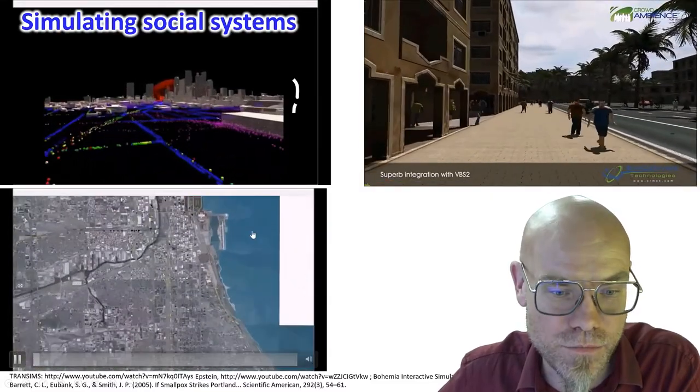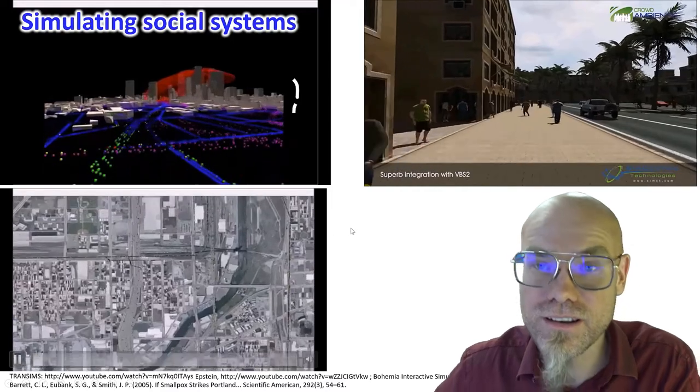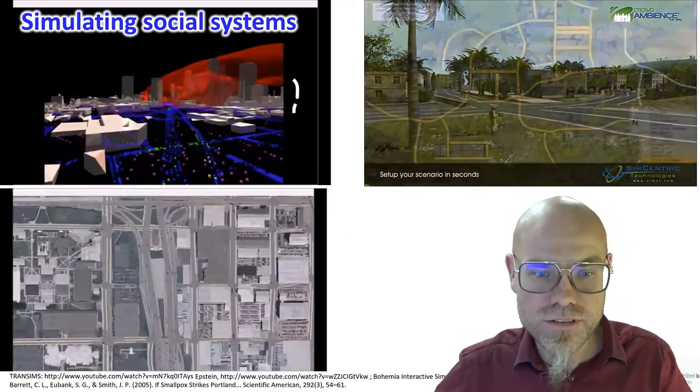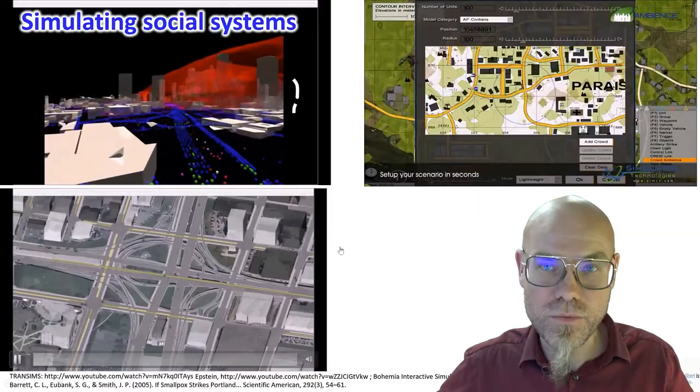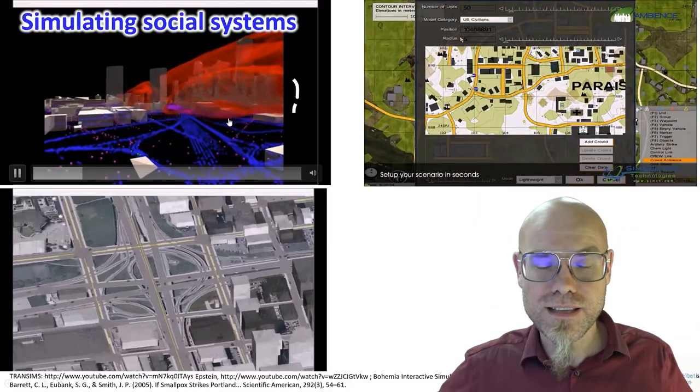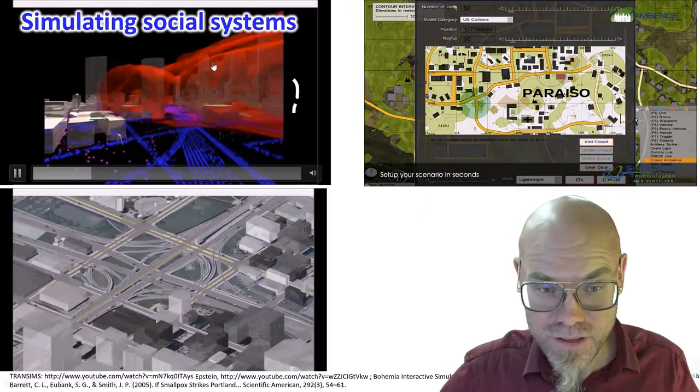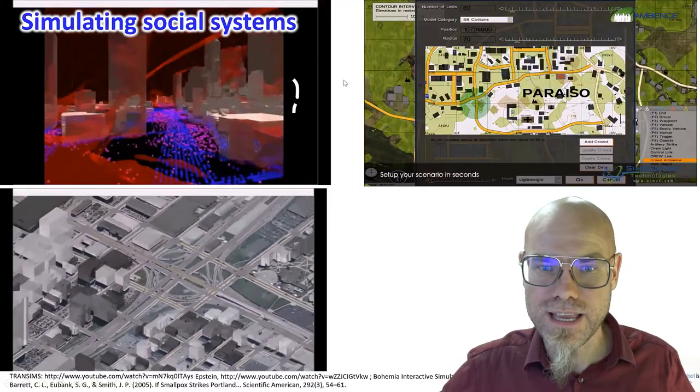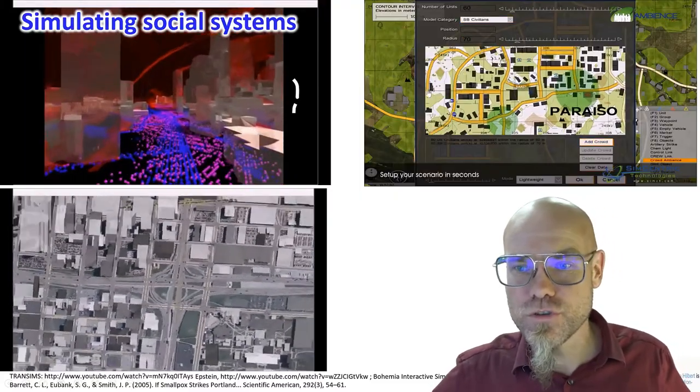This is here a simulation of Chicago, also equilibrated with real-time data, basically from cell phones. If a cell phone moves on a freeway, we assume there's a car around it. So that's how we model cars. This is a chemical attack in Los Angeles, which thankfully never has occurred, but we can simulate it. And we have a digital twin, in case that would happen, what could and should we do.